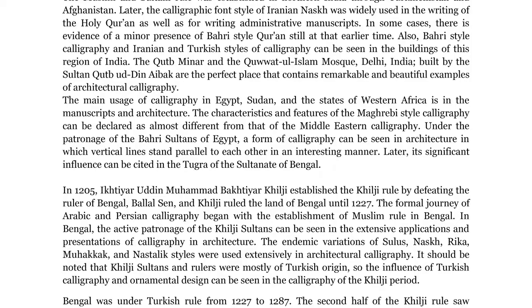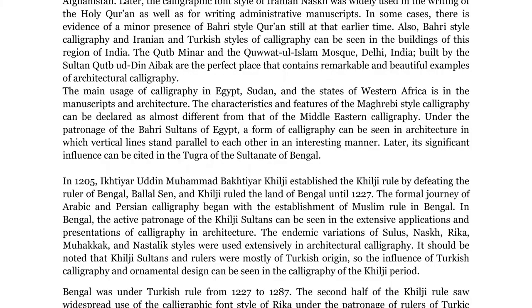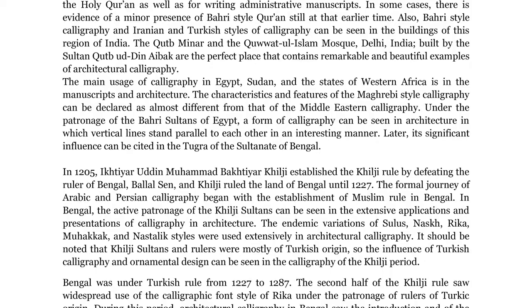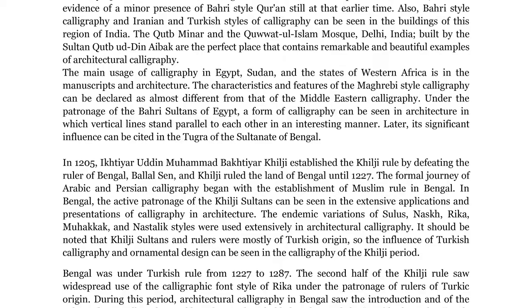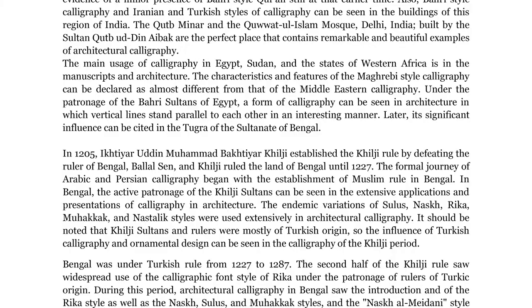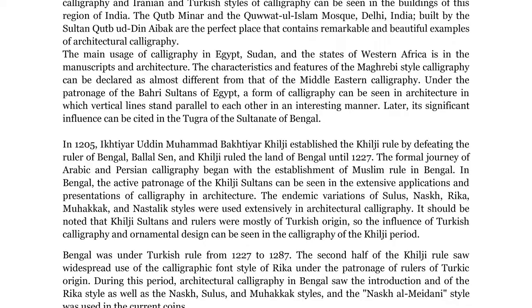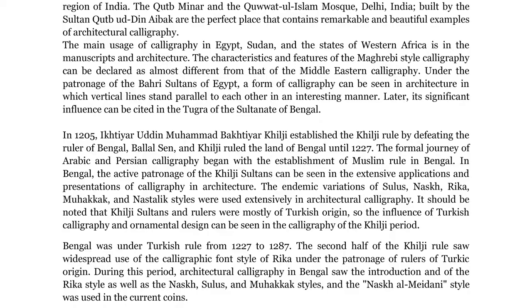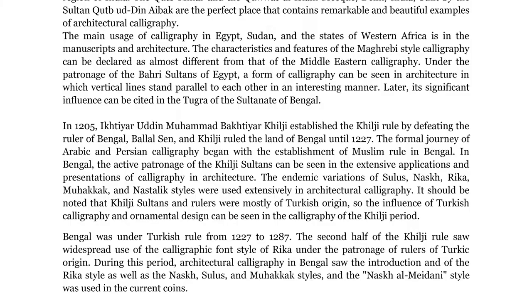The main usage of calligraphy in Egypt, Sudan, and the states of Western Africa is in the manuscripts and architecture. The characteristics and features of the Maghrebi-style calligraphy can be declared as almost different from that of the Middle Eastern calligraphy. Under the patronage of the Bari Sultans of Egypt, a form of calligraphy can be seen in architecture in which vertical lines stand parallel to each other in an interesting manner. Later, its significant influence can be cited in the Tughra of the Sultanate of Bengal.